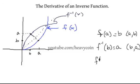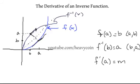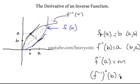If I took the derivative of F and plugged A in, we're going to say that the slope of that tangent line is equal to M. So if we draw a picture, the derivative at A would be equal to M. Now the other tangent line — what would the slope of that tangent line be?